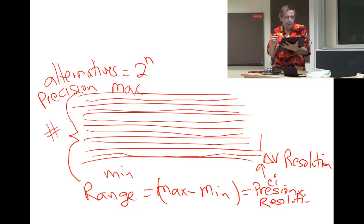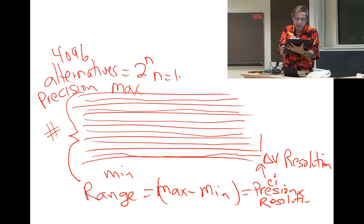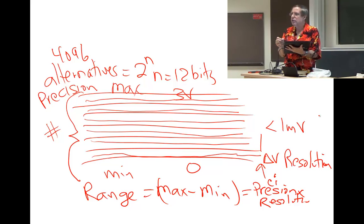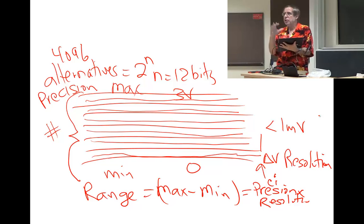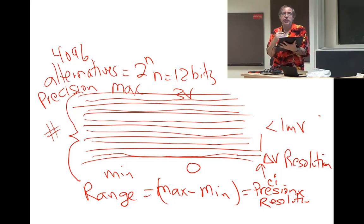In our case it's going to be a 12-bit converter, so we'll have 4,096 alternatives — 12 bits. Our range is going to be from zero to three volts, which gives us a resolution of somewhere less than a millivolt.